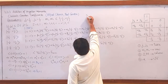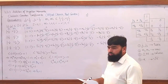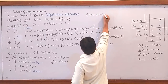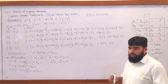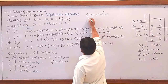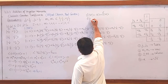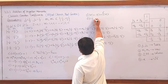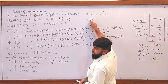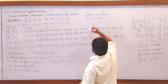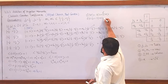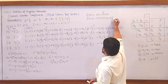We know that when Ŝ² operates on any wave function, it gives S(S+1)ℏ² times that wave function. So when I apply Ŝ² on |1,1⟩, since S = 1, I get 1·(1+1)ℏ² = 2ℏ² times |1,1⟩. We have already proved these results. Now I will apply Ĵ² on the product state.